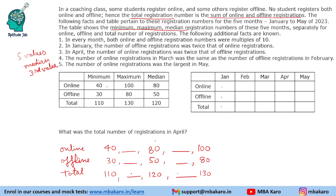In January, the number of offline registrations was twice that of online registrations. If offline is twice online, then online is x and offline is 2x, so total will be 3x — a multiple of 3. Since these are also multiples of 10, the total must be a multiple of 30. The total must be between 110 and 130, so the only multiple of 30 in that range is 120. Therefore online is 40, offline is 80, and total is 120 for January.